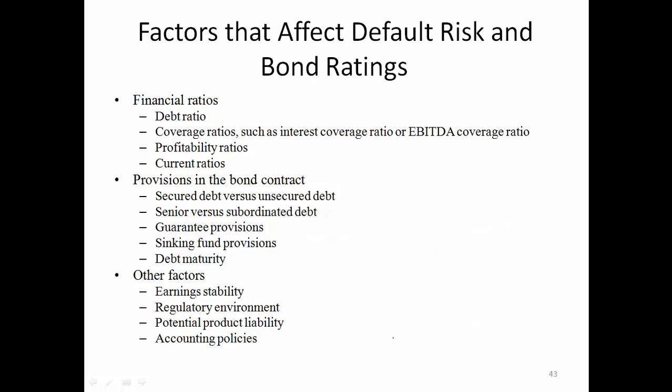Default risk premium is the additional return investors require to compensate for default risk. Standard measurement tools include credit ratings from agencies such as Standard & Poor's, Moody's, and Fitch. For example, AT&T's bond has a Fitch rating of A, indicating it is fairly safe. Factors affecting default risk and bond ratings include financial ratios like the debt ratio, bond contract provisions such as whether the bond is unsecured, and the company's earning stability and potential product liability.